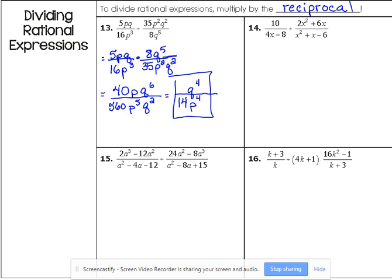Okay, number 14. This one has binomials and trinomials in it, but the first step remains the same. I keep the first part the same. It turns into multiplication, and I flip the second rational expression over. Now, if you can flip and factor at the same time, you're going to save yourself some writing. Okay, if you can flip and factor at the same time, you're going to save yourself some writing, but I don't want you to get too ahead of yourself and get confused. So, let's just try and do it one step at a time. All right, 10. It's monomial. We don't factor it. We just leave it.